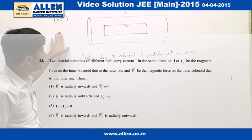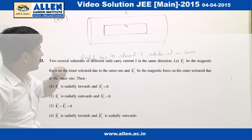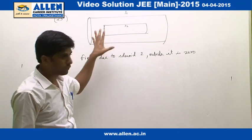In question number 23, two coaxial solenoids are given, in which solenoid S2 is kept inside the solenoid S1.